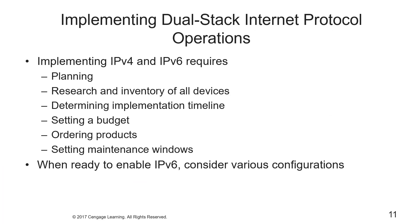Implementing v4 and v6 in the network infrastructure requires planning and upfront research and inventory of every single device that makes up the core of the network — routers, switches, firewalls, and other devices. You'll have to get detailed information like model number, hardware processing capability, software version, and RAM in order to determine the possible v6 capabilities. Working through these considerations may help determine your implementation timeline, the amount of money that needs to be budgeted, the products that need to be ordered, and the maintenance windows that need to be scheduled for doing device upgrades.